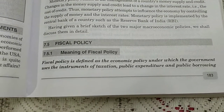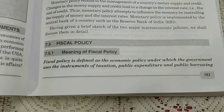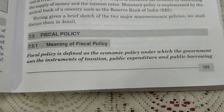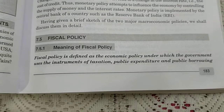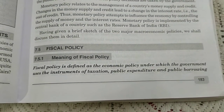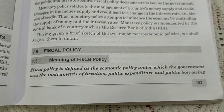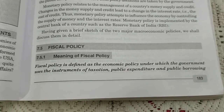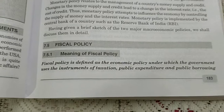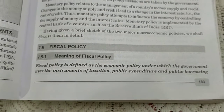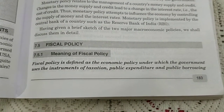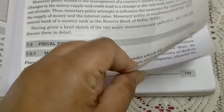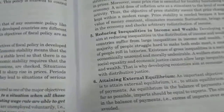Fiscal policy aims to promote economic and various social goals. The three instruments are: taxation — from where the government gets revenue; public expenditure — the places where the government spends; and public borrowing — from which sources the government borrows.